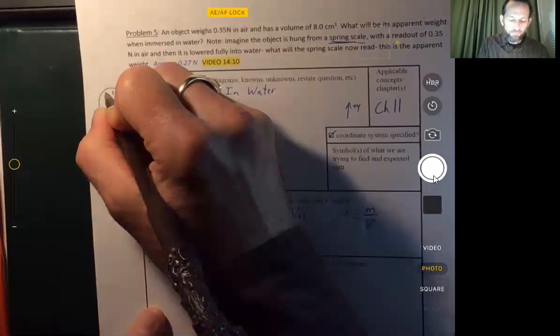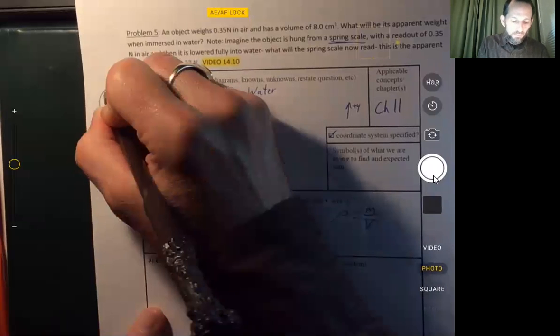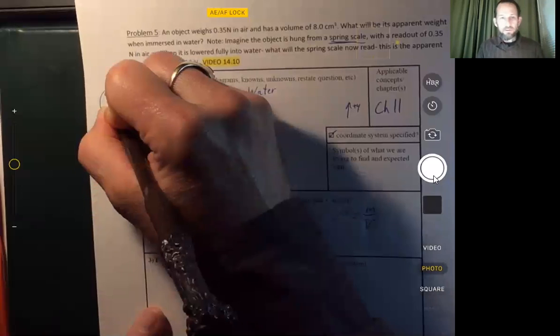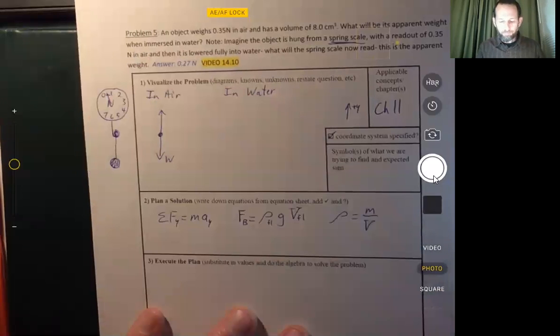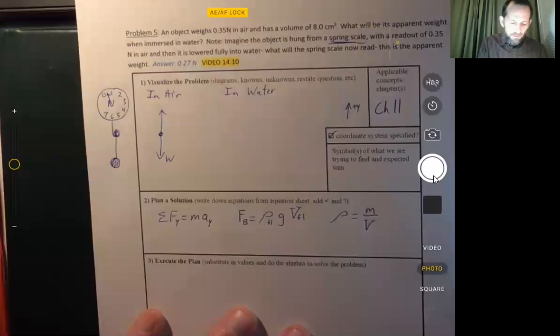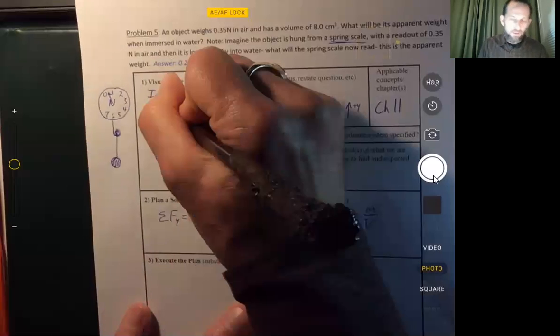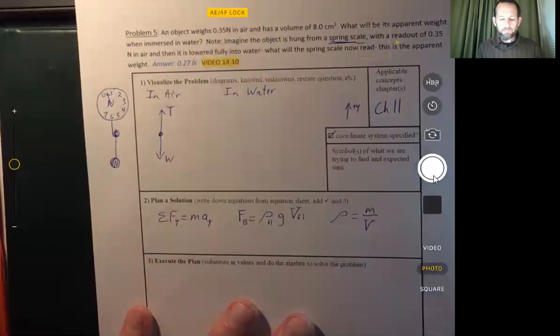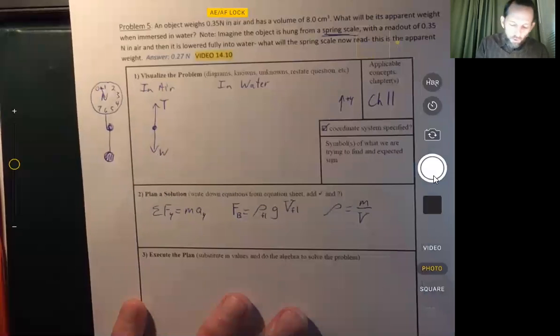And so this one reads 0.35 newtons when it's in air. And so where it's hanging from a string, I'm going to call that the tension. When it's in water, then the tension is not going to be as much.